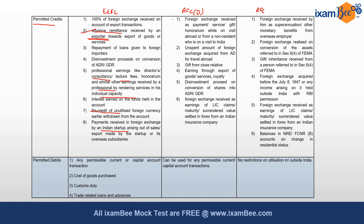For the RFC Domestic account, the first permitted credit is foreign exchange received as payment, service, gift, or honorarium while on a visit abroad, or from a non-resident who is on a visit to India. The second is unspent foreign exchange acquired from an authorized dealer for travel abroad. The third is a gift from a close relative. The fourth is earnings through export of goods, services, or royalty. The fifth is disinvestment proceeds on conversion of shares into ADR or GDR.